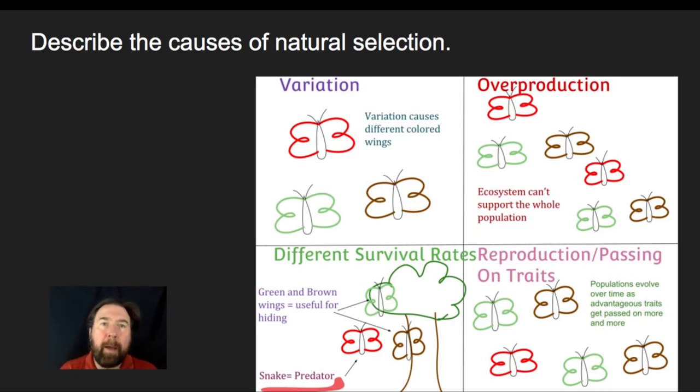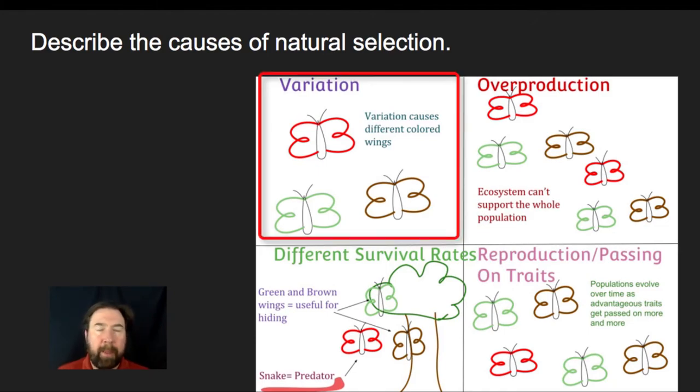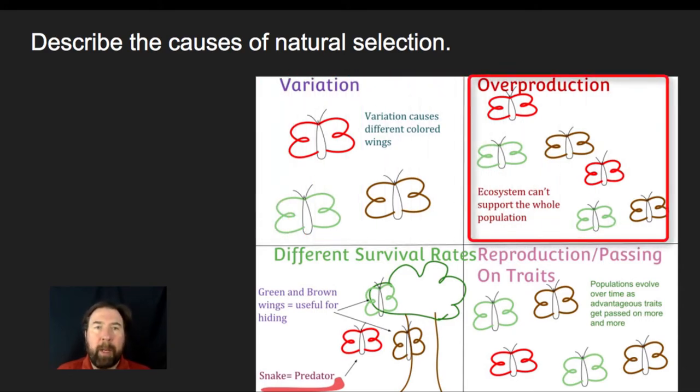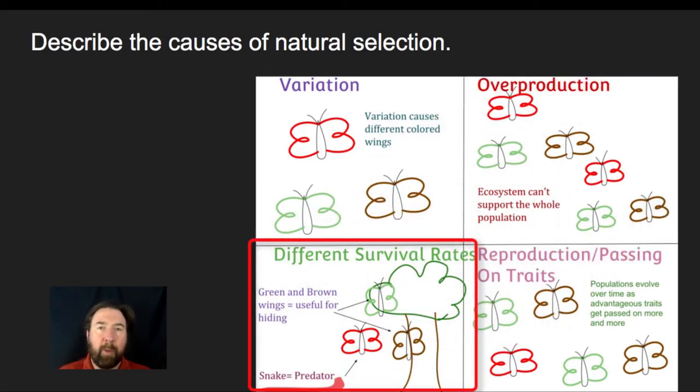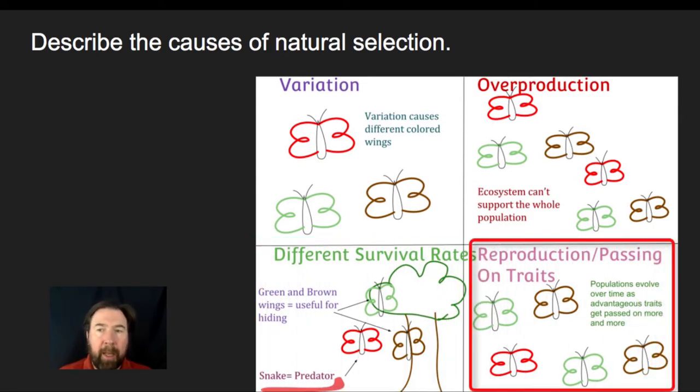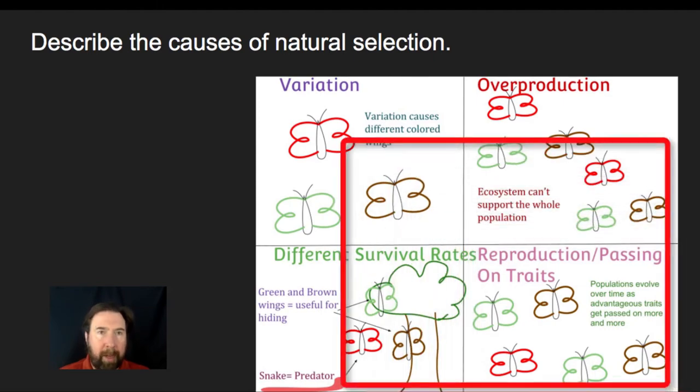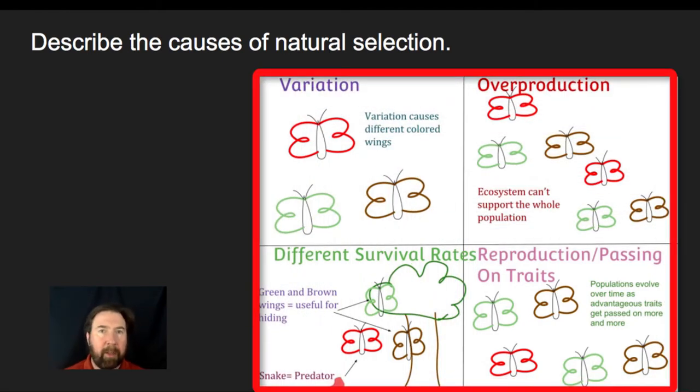One of the key things about natural selection is that there are several key components. All populations have some degree of variation initially. There's also an overproduction of offspring each generation, so more individuals will be produced than could possibly survive in a given environment. Not all individuals will survive equally because of variation. Some will be better at surviving and others less so. Reproduction leads to passing on certain traits, and all of these factors come together to lead to natural selection.